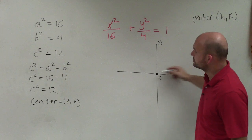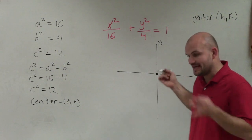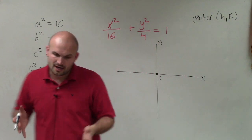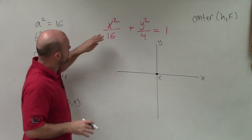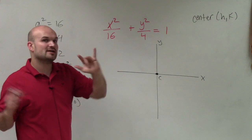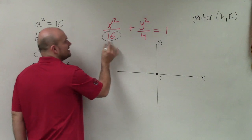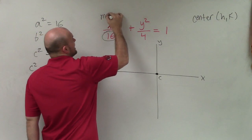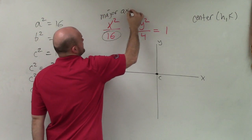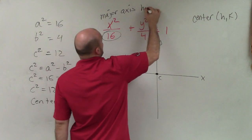And that's very important for us to understand. So what we need to be able to do is determine where is our major axis. And since my a is under the x squared, I can now say that my major axis is horizontal.